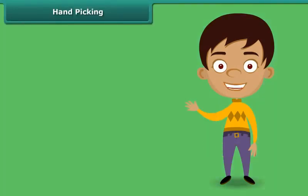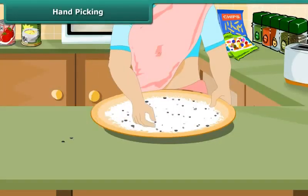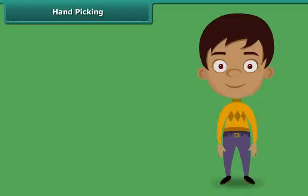How does your mother separate small pieces of stones and other impurities from wheat, rice and pulses? Yes, simply by picking them up by hand, one by one. The method of hand-picking can be used for separating impurities that are easily visible to the naked eye and are present in small quantity in the form of dirt, husk and stone.